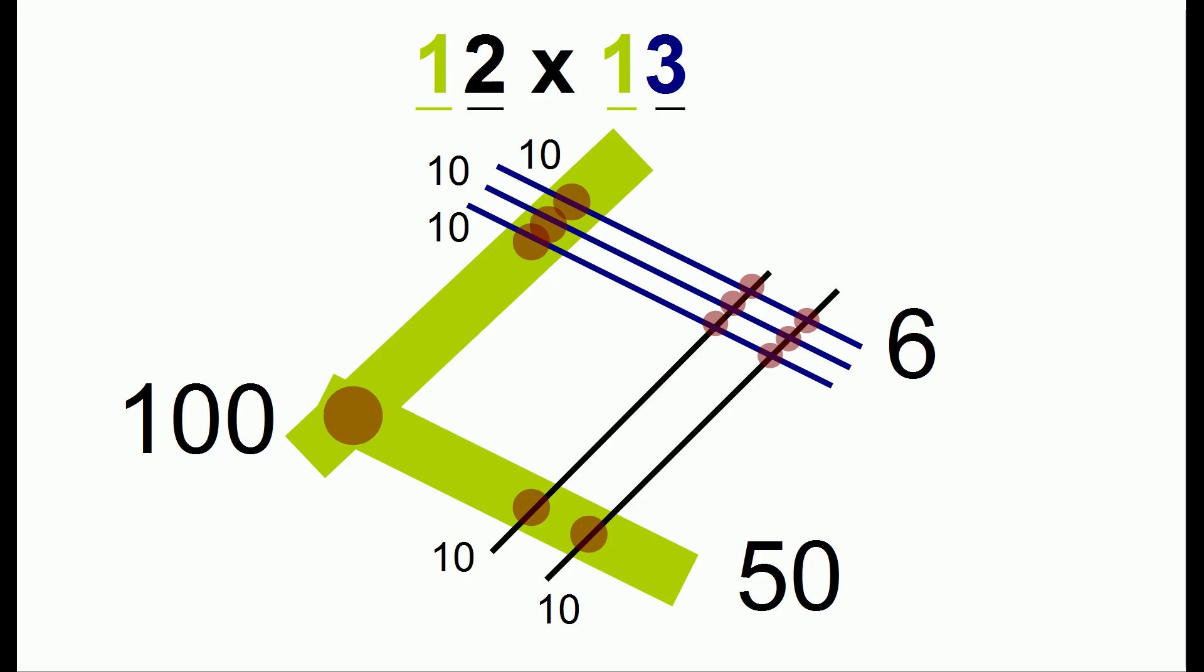Now we simply add up all the different numbers. Because the whole point of multiplication by lines is to count up the number of dots. So on the left we have 100 dots. In the middle we have 50 dots. And on the right we have 6. So 100 plus 50 plus 6 is 156. And that's the essence of multiplying by lines.